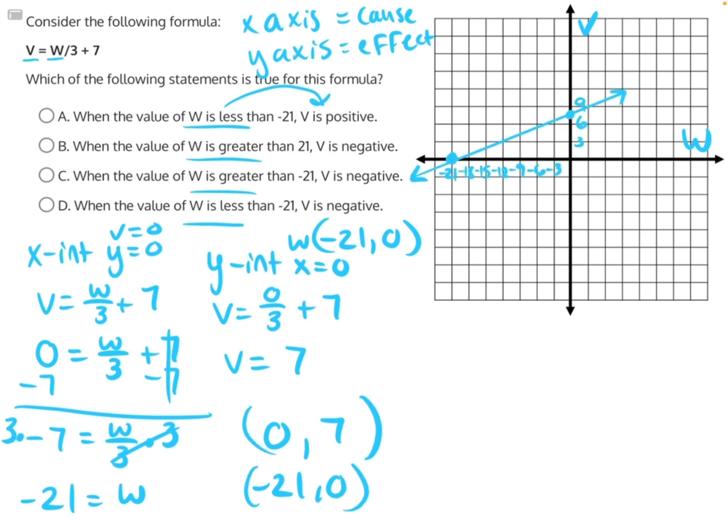Here I have plotted our two intercepts, one at 0 comma 7, which means I went to the right 0 and up by 7, and then negative 21 comma 0, which means I went to the left by 21 and up 0.